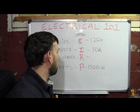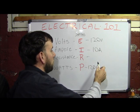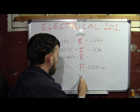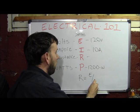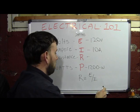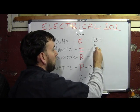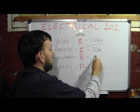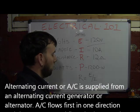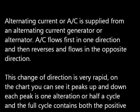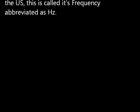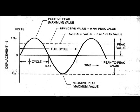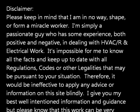The last thing we need to figure out is our resistance — our ohms — how much resistance does this appliance have? Resistance R is equal to voltage (E) divided by amperage (I). In this case, 120 divided by 10 equals 12 ohms of resistance.